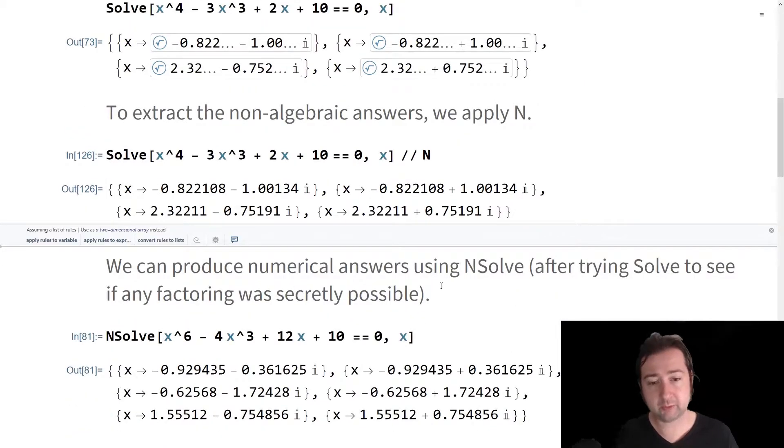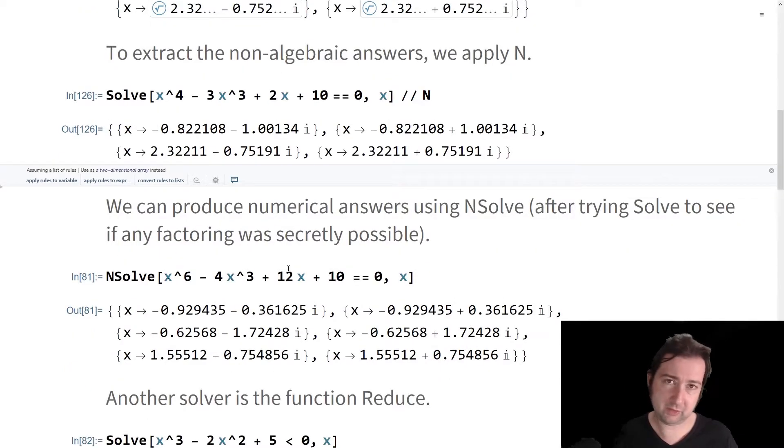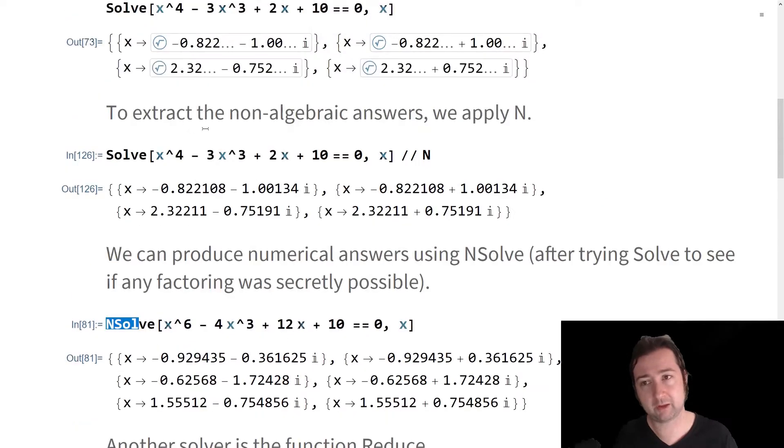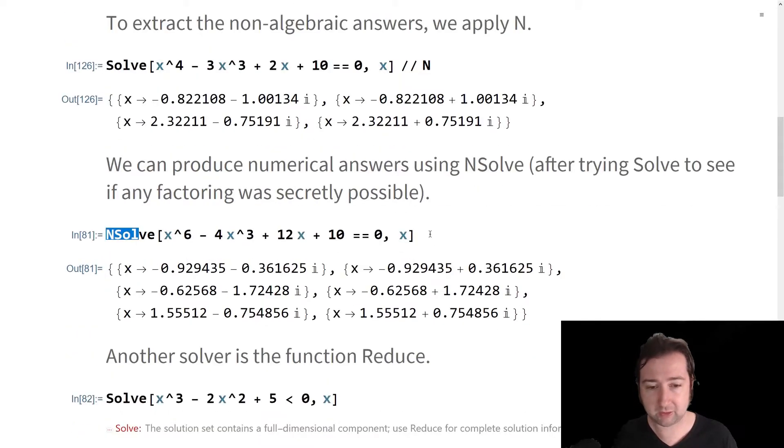You can also produce numerical answers using NSolve. Sometimes if you use Solve and it fails, you can use NSolve to flip over to expressly numerical thinking. In this case, Solve and NSolve give the same answers. But if you give NSolve, it skips the step where it gives you root expressions and just tells you what the answers are. We have six complex numbers occurring in conjugate pairs, as we expect with a polynomial that has real coefficients.